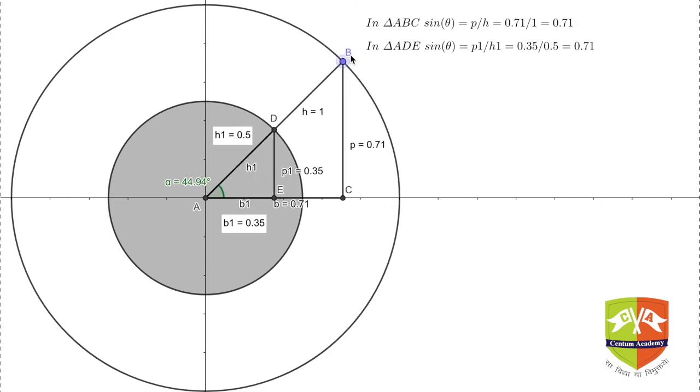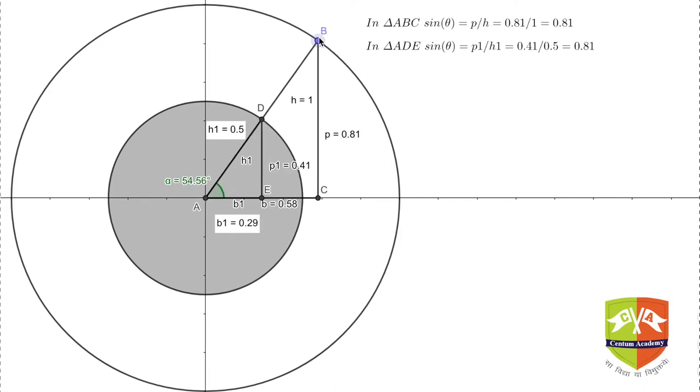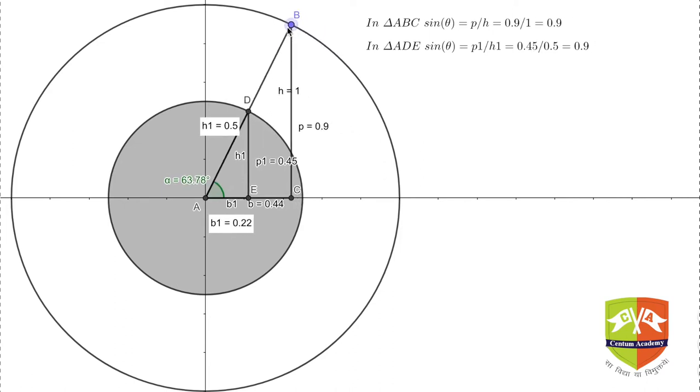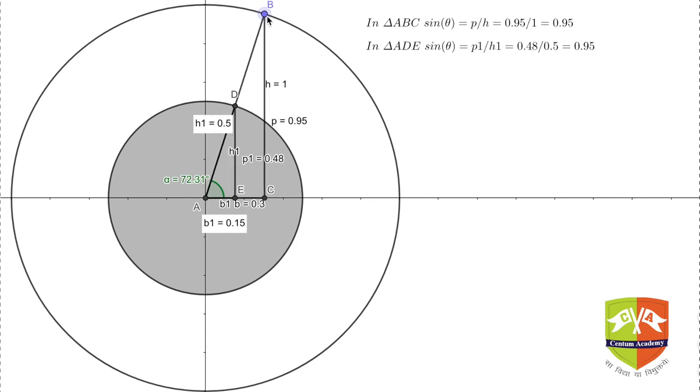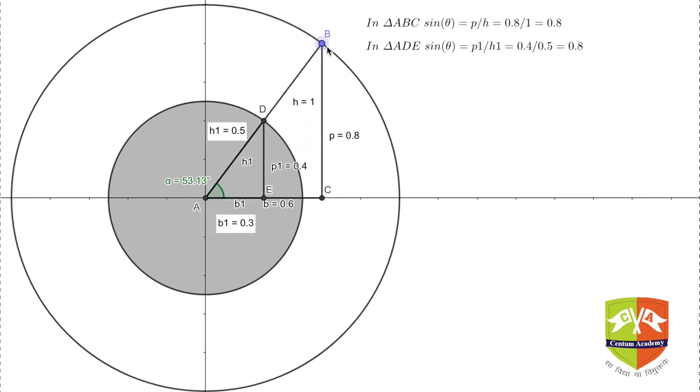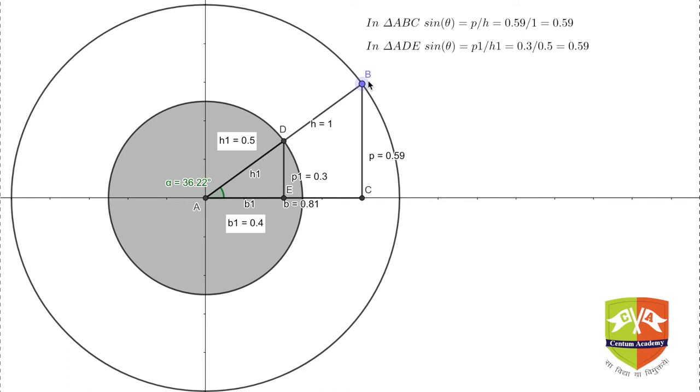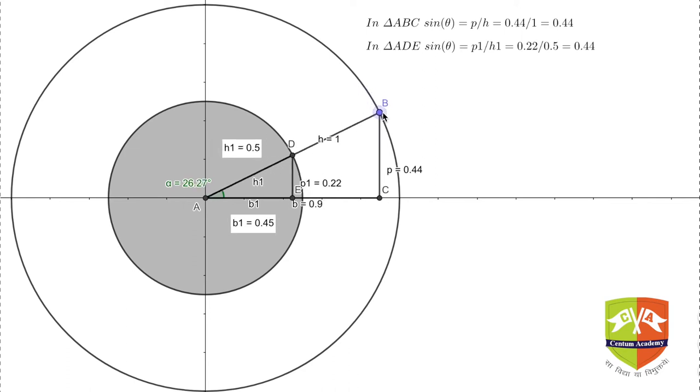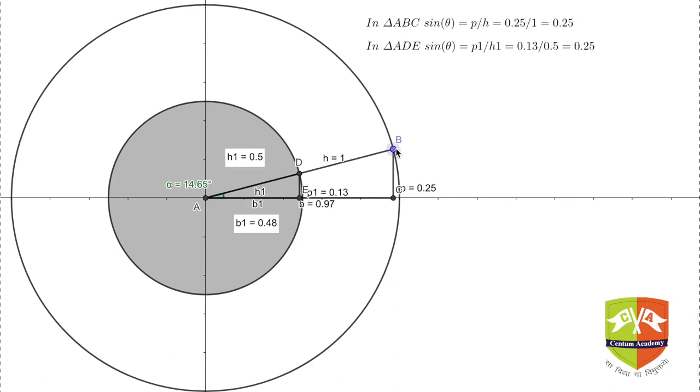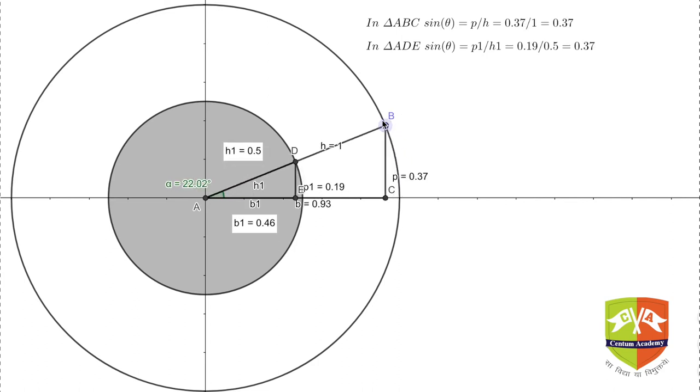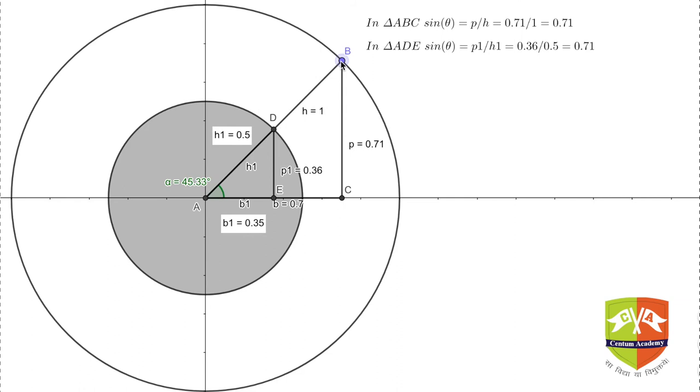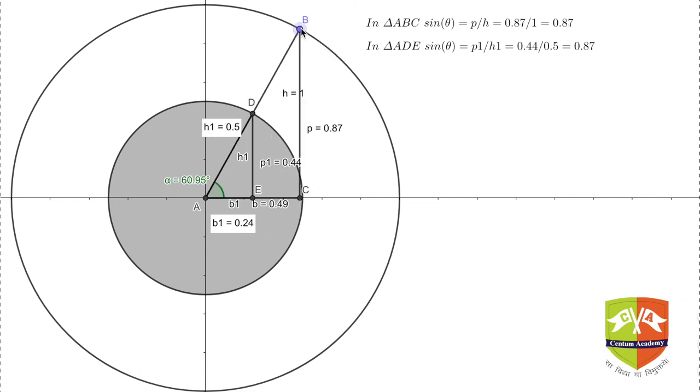So you could have figured out by now that the sides of the triangle are varying proportionately. You will learn this concept in similar triangles as well. You can use the concepts of similar triangles to prove that the ratio of the two sides, which are mentioned here as P by H and P1 by H1, will not change because the triangles are similar in every case.